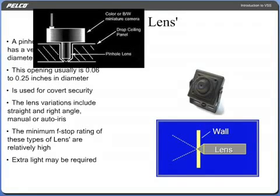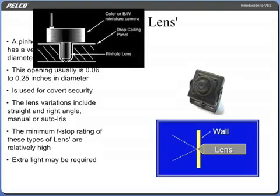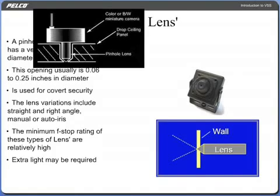A pinhole lens is a lens that has a very small front opening diameter. This opening usually is 0.06 to 0.25 inches in diameter and is used for covert security. The lens variations include straight and right angle, manual or auto iris, and narrow taper or stubby front design. Due to the special lens optics required, the minimum f-stop rating of these types of lenses is relatively high, 2.8 to 3.5.